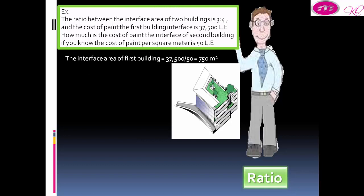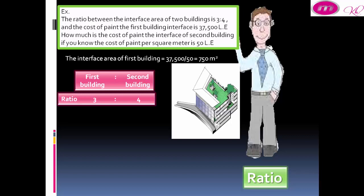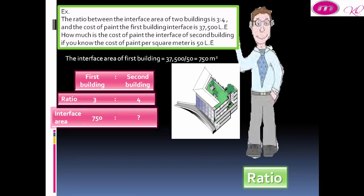The interface area of the first building equals 37,500 divided by 50 equals 750 meter square. The interface area of the second building equals 750 by 4 divided by 3 equals 1,000 meter square. The cost of painting equals 1,000 by 50 equals 50,000 LE.